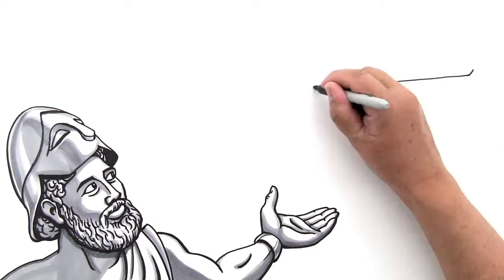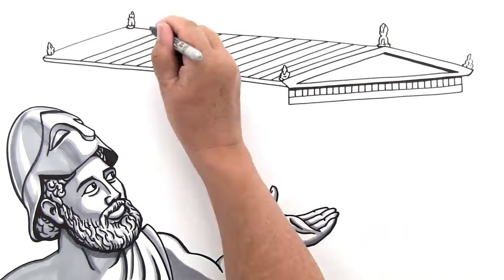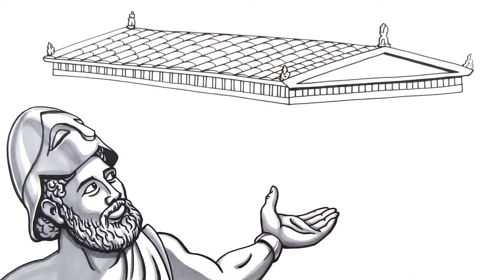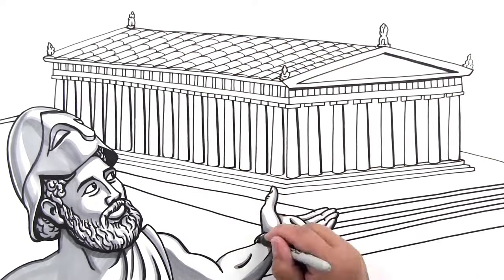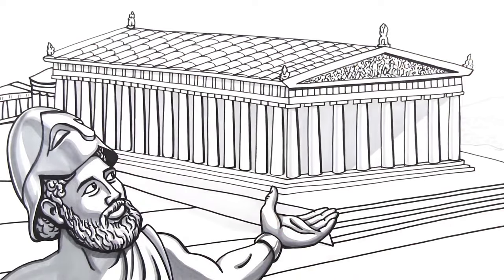Pericles, the leader of Athens, ordered the rebuilding of the temples on the Acropolis, where the famous sculptor Phidias decorated the Parthenon, a temple dedicated to Athena, the founding goddess of Athens.